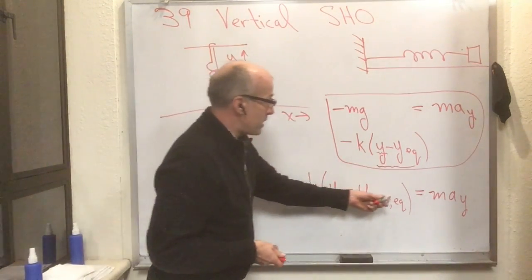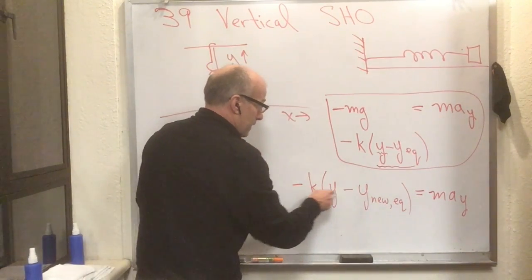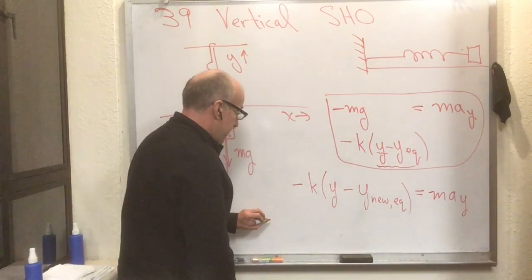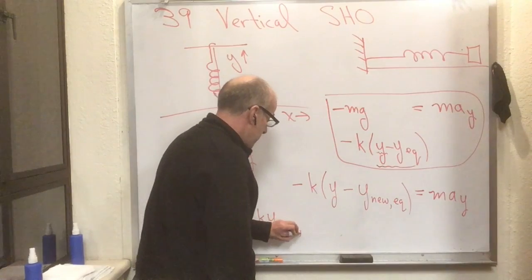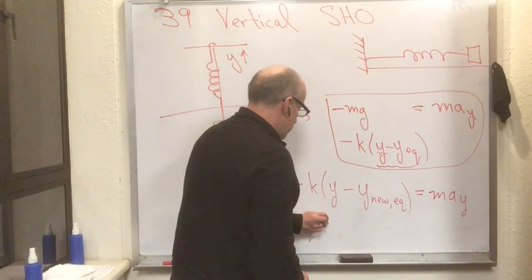So now let's just figure that out. If I want y_new_eq, look at what we've got here. We've got minus k times y_new_eq, so those two minus signs cancel and I've got y_new_eq. That better be the same as the minus mg term times minus k times the old y_eq.